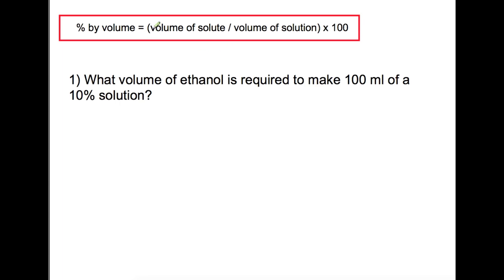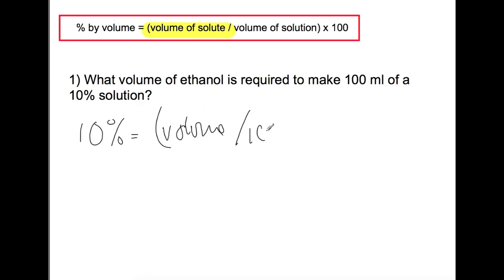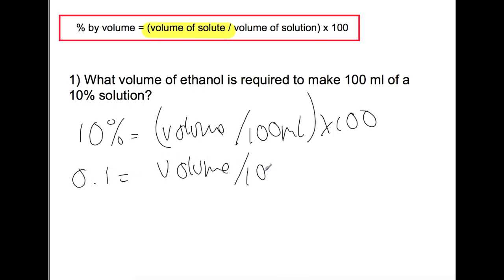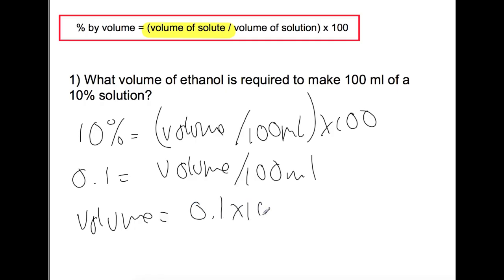In the first example, we are trying to find the volume of ethanol needed to make a 10% ethanol solution with a total volume of 100 millilitres. Dividing both sides by 100 and rearranging for volume, we find that we would require 10 millilitres of ethanol to make this solution.